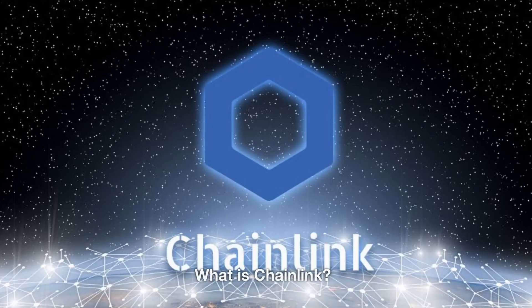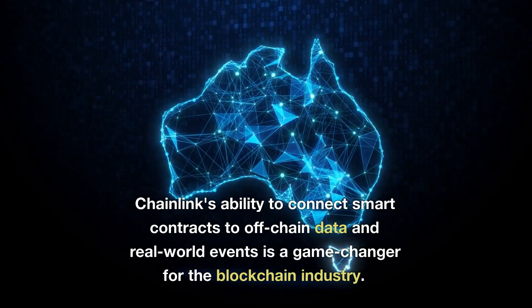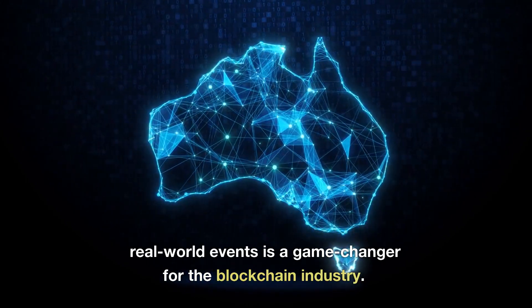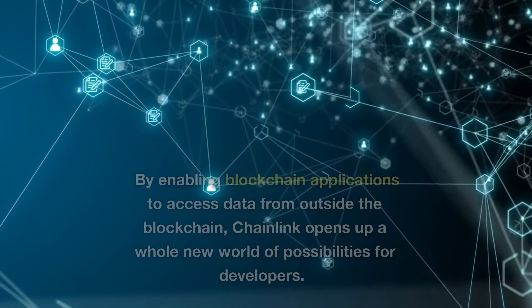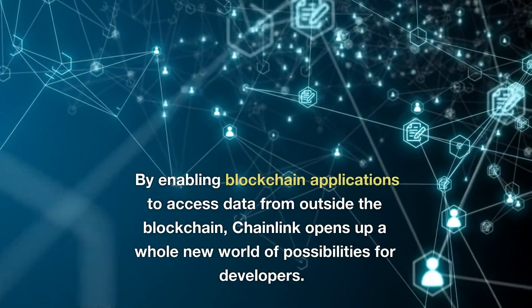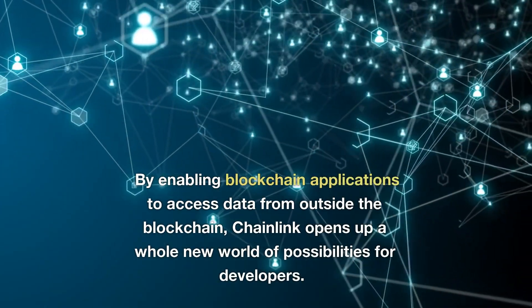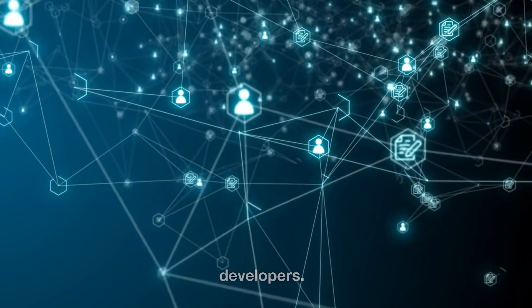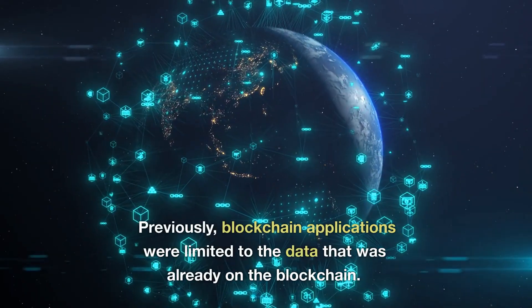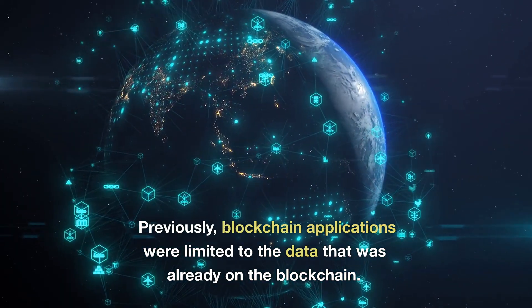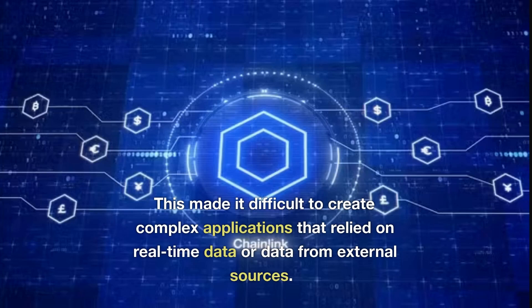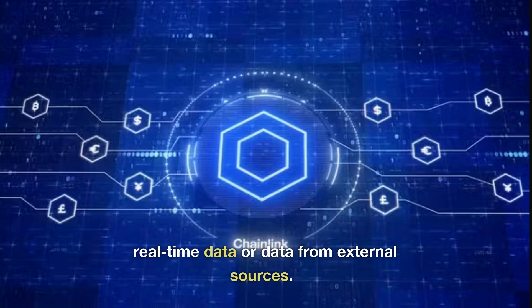What is Chainlink? Chainlink's ability to connect smart contracts to off-chain data and real-world events is a game-changer for the blockchain industry. By enabling blockchain applications to access data from outside the blockchain, Chainlink opens up a whole new world of possibilities for developers. Previously, blockchain applications were limited to the data that was already on the blockchain.